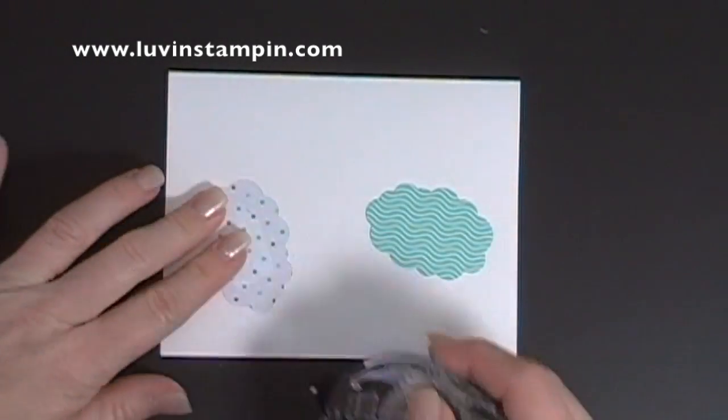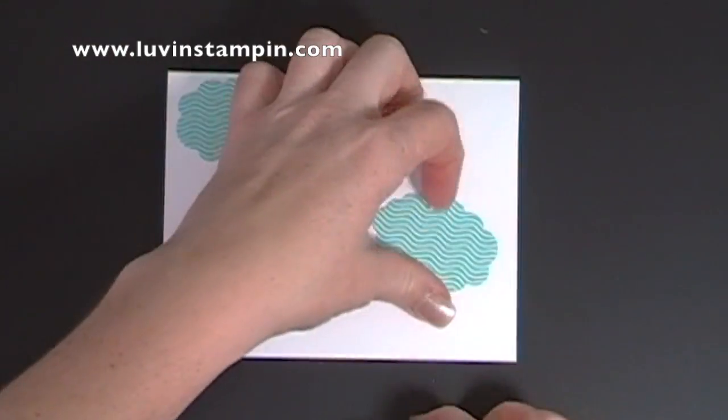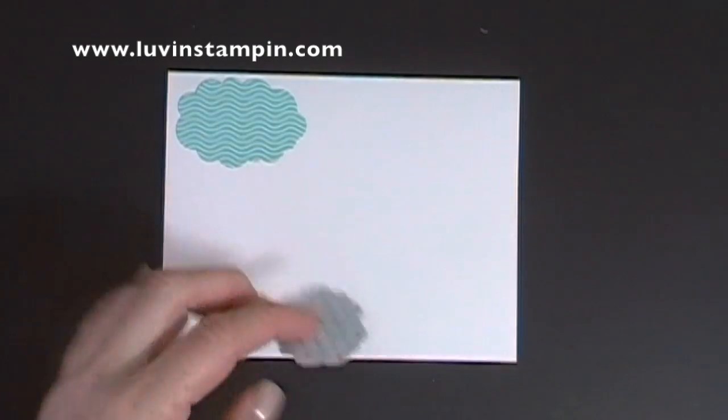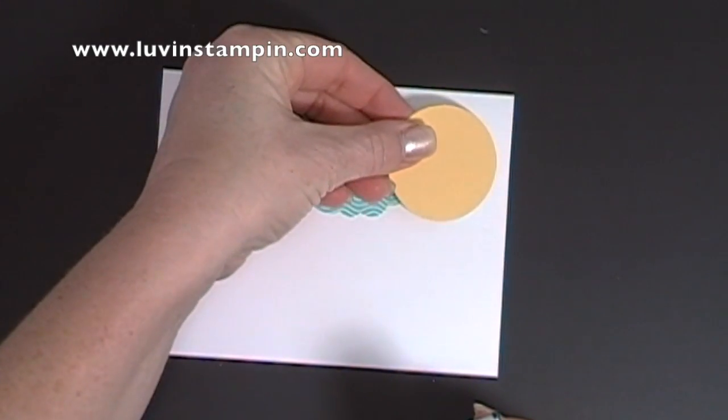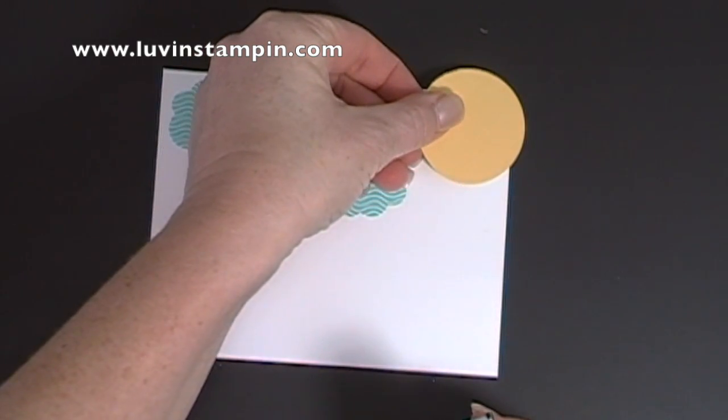So I'm going to go ahead and adhere these clouds down. There's a couple of really cute tricks to this card that are just fun and ways that you could use it on another card. So I'm going to show you those. To make the sunshine up in the top corner, I didn't want the whole sunshine like this. I wanted it to go off the card.